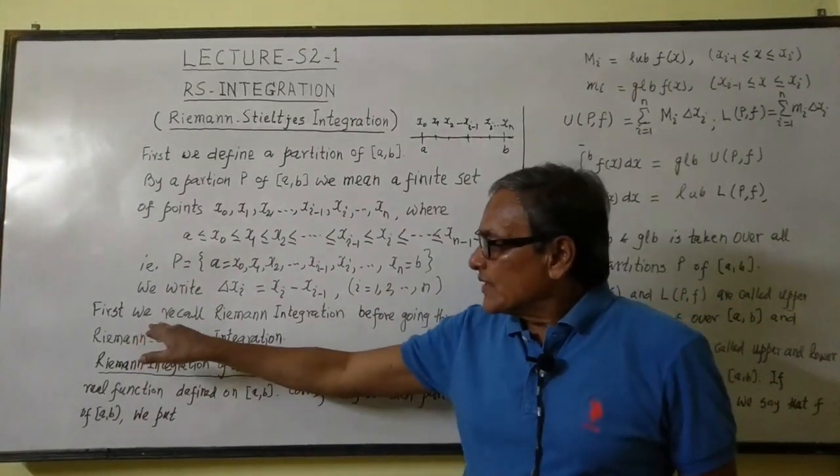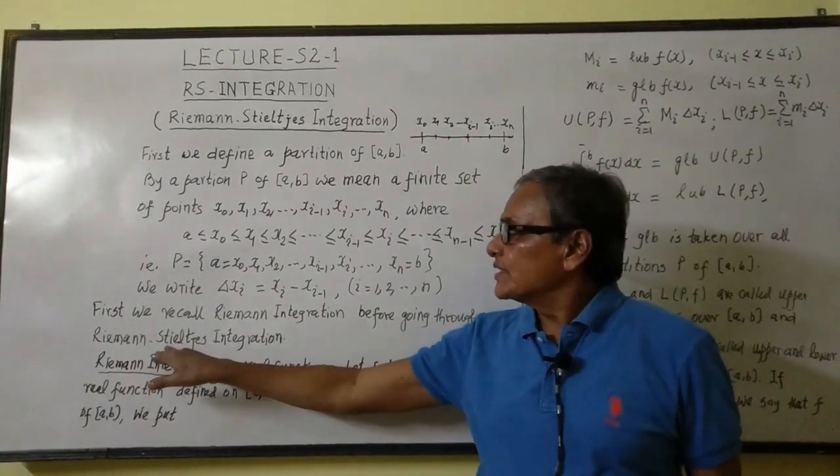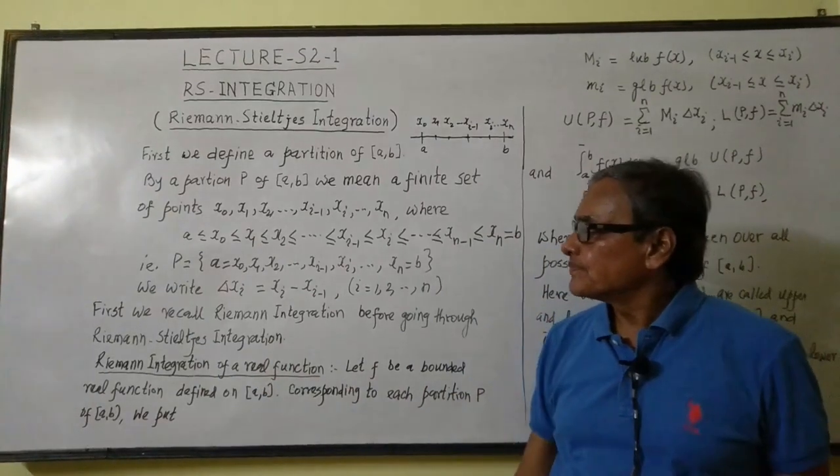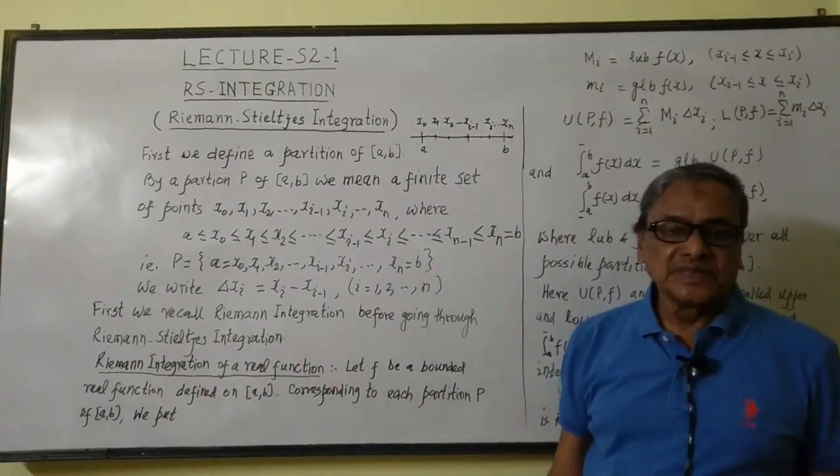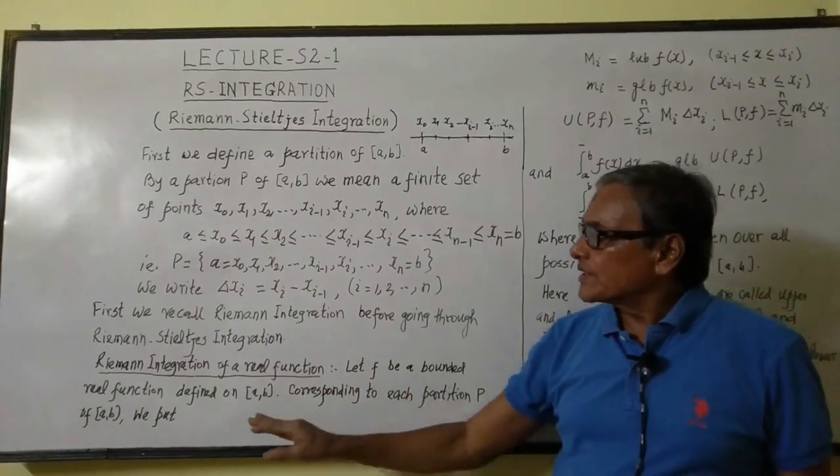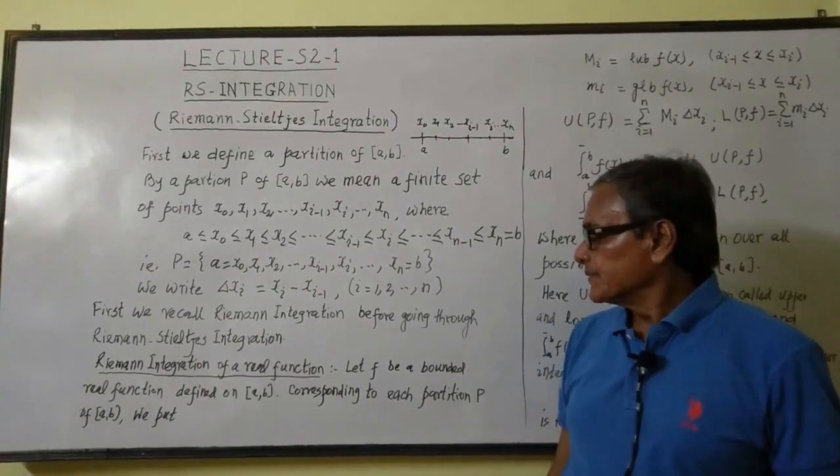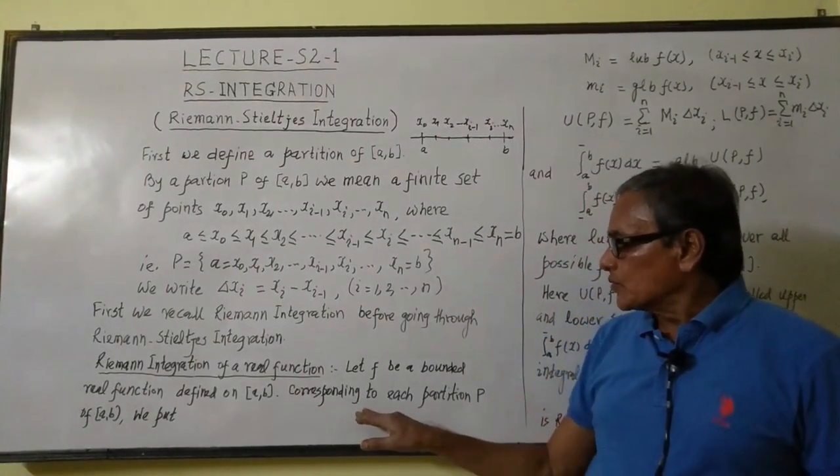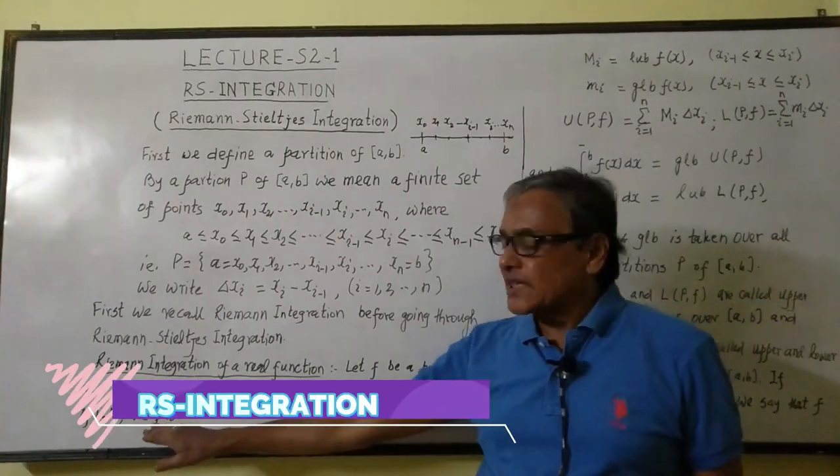First we recall Riemann integration before going through Riemann-Stieltjes integration. Riemann integration of a real function: Let f be a bounded real function defined on [a,b]. So corresponding to each partition P of [a,b],